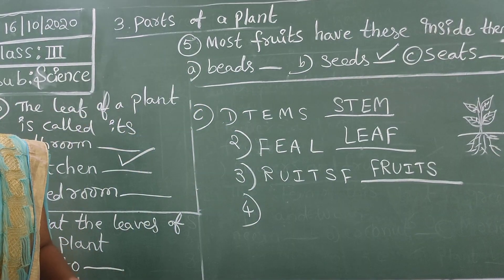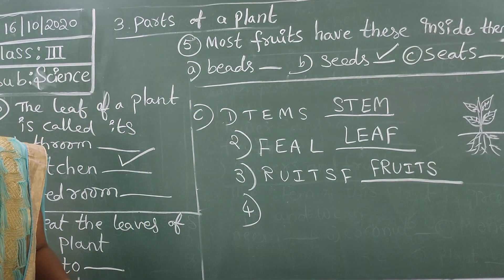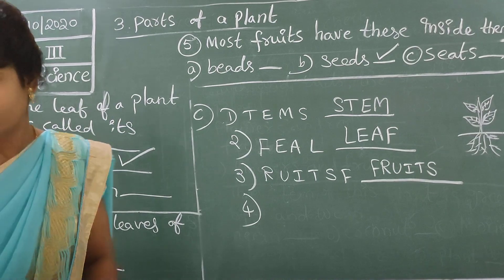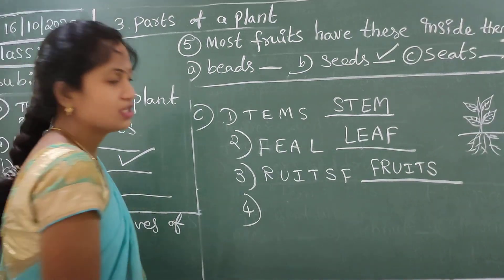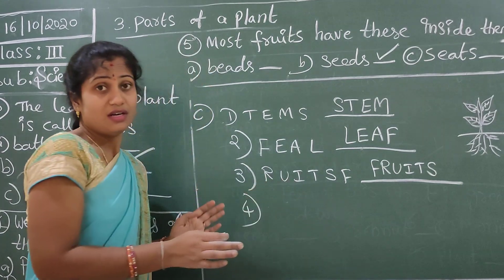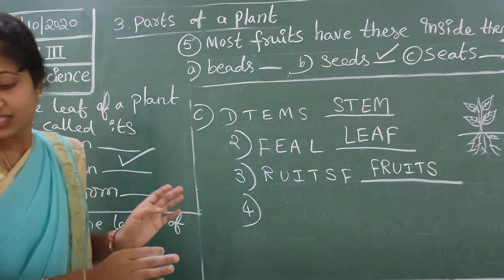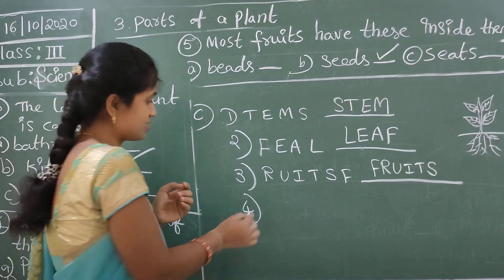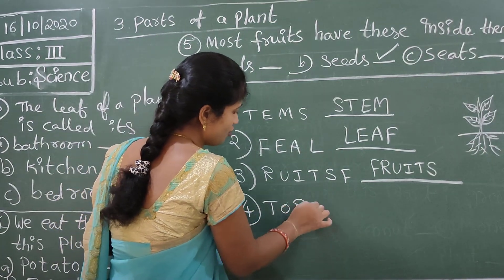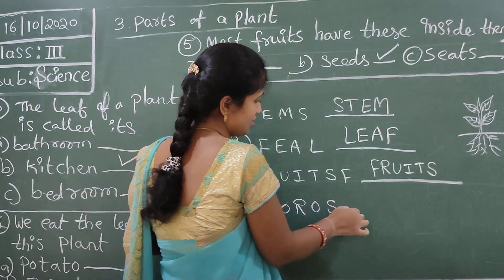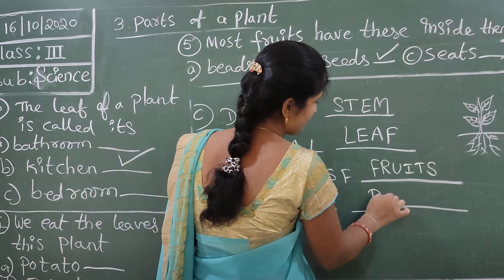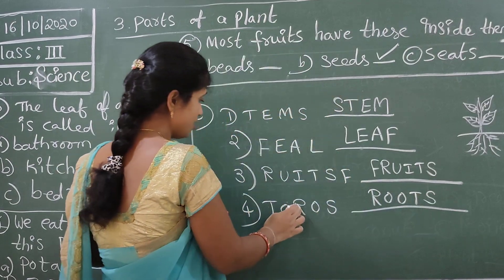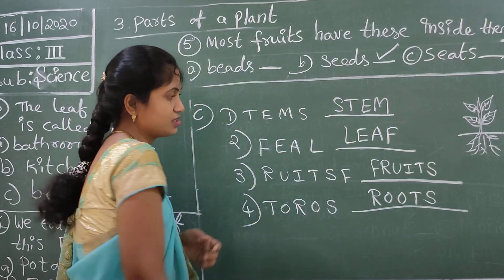They take in salts and water from the soil - that is roots. Here the letters are in reverse: T-O-R-O-S, unscramble to get R-O-O-T-S. Roots.